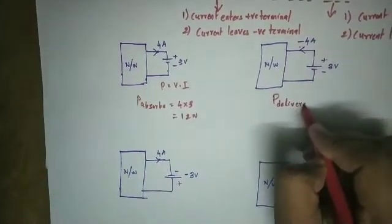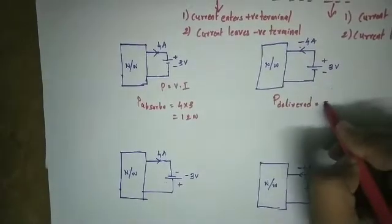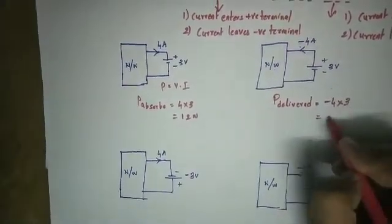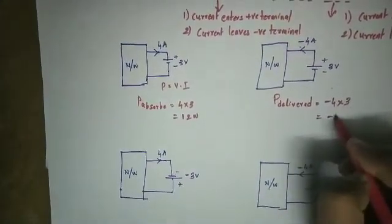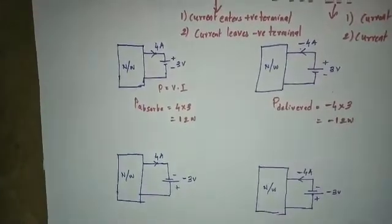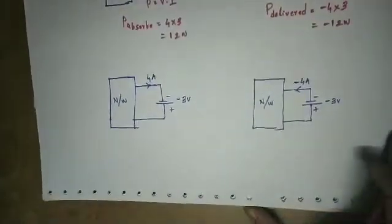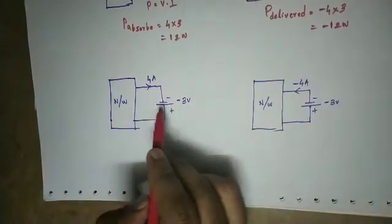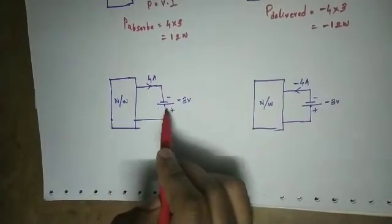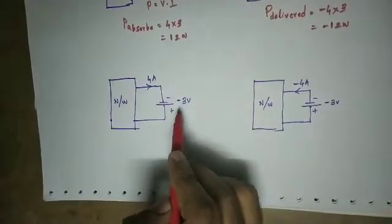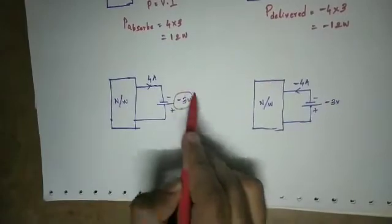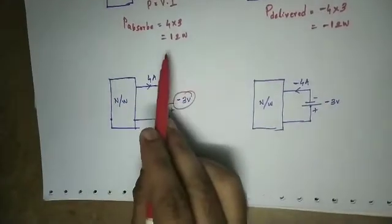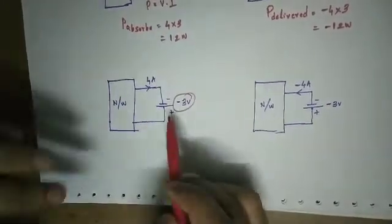Power delivered is equal to minus 4 amps into 3 volts, which is minus 12 watts. For the next circuit, the current direction is the same but the voltage polarity changes, so the magnitude of voltage is negative, equal to minus 3 volts.